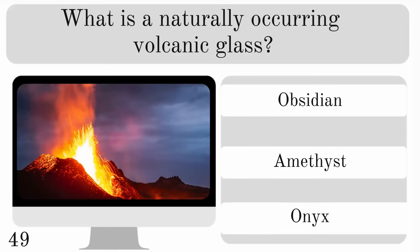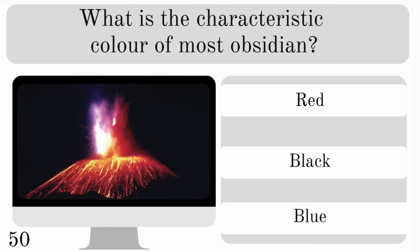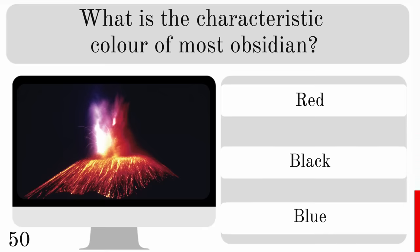What is a naturally occurring volcanic glass — obsidian, amethyst or onyx? The answer is obsidian. So what is the characteristic colour of most obsidian — red, black or blue? It is usually black.